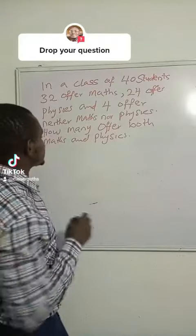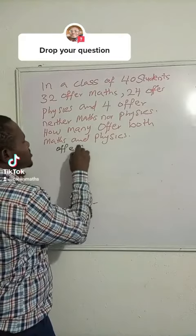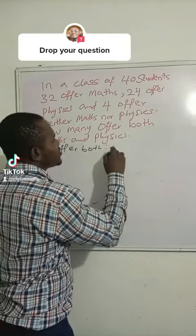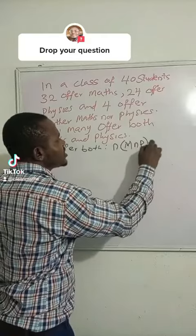So I'm going to use set notation. The number of people that offer both will be number of math intersection physics, let it be x.